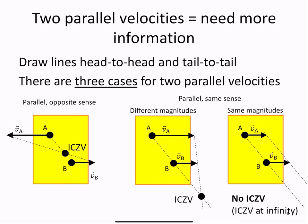If they have the same sense but different magnitudes, you'll also find an ICZV, and it'll occur on either side of the two points.